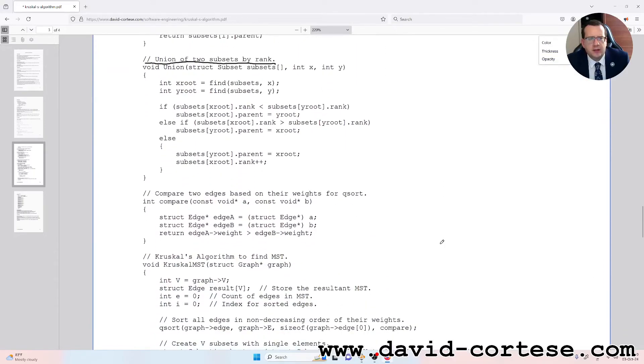And the union of two subsets by rank. After this, you have to compare two edges based on their weights for Q-sort,